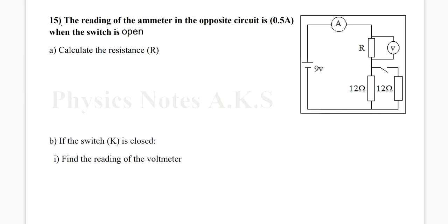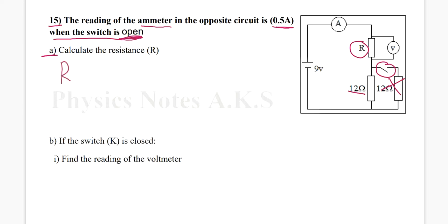Question 15: the reading of the ammeter in the circuit is 0.5 when the switch is open. Calculate resistance R. When the switch is open, this one resistor doesn't exist, so I only have two resistors — 12 ohm and R — connected in series. The total resistance for them is 12 plus R.